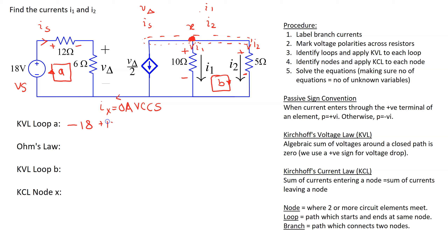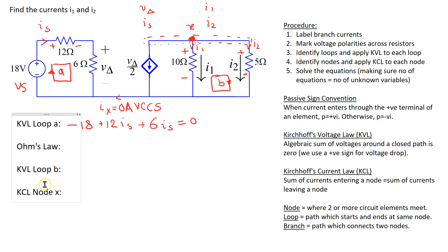This gives 12·i_s, and then another voltage drop across the 6 ohm resistor gives 6·i_s, so the KVL equation for loop A is: −18 + 12·i_s + 6·i_s = 0. Now let's apply Kirchhoff's voltage law to loop B. We can start at any circuit component; suppose we start at the 5 ohm resistor.